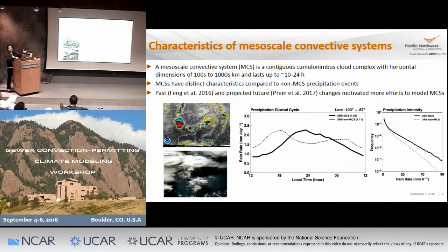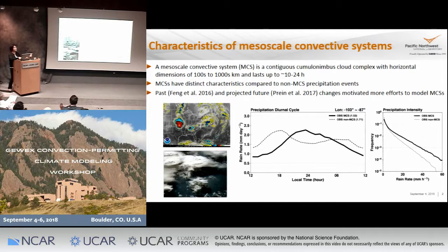whereas for other types of convective precipitation, kind of like deep convective cells, they typically maximize around late afternoon — so there is a six-hour difference between the two. Also, if you look at the intensity, MCS precipitation is also rather different from non-MCS precipitation. You can see the dark line showing that MCS precipitation is typically more intense compared to non-MCS precipitation.